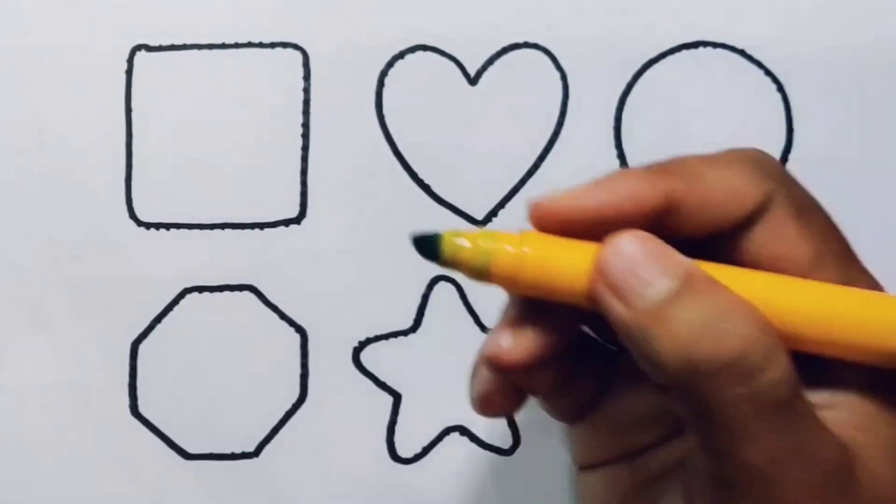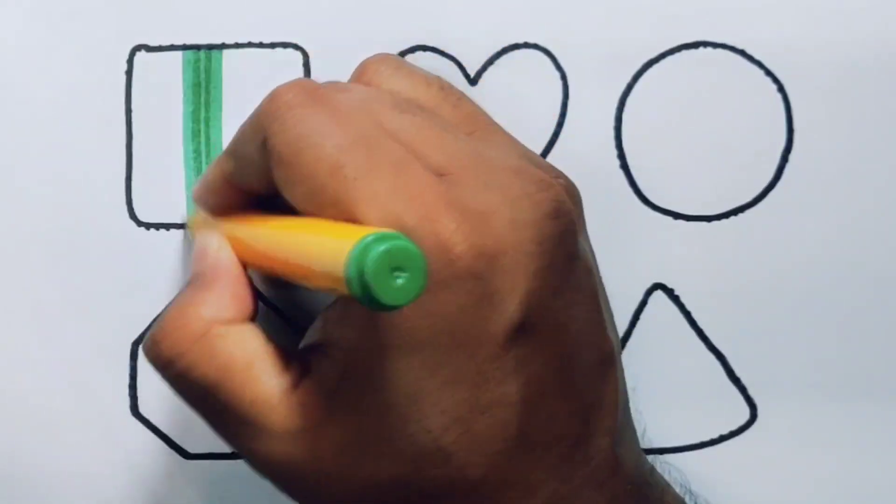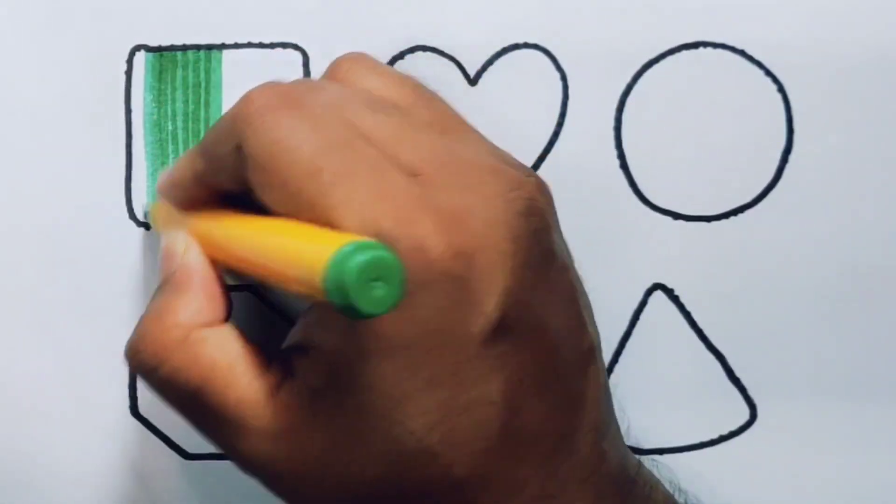Triangle. Now we're going to put the color. Green color, Square.